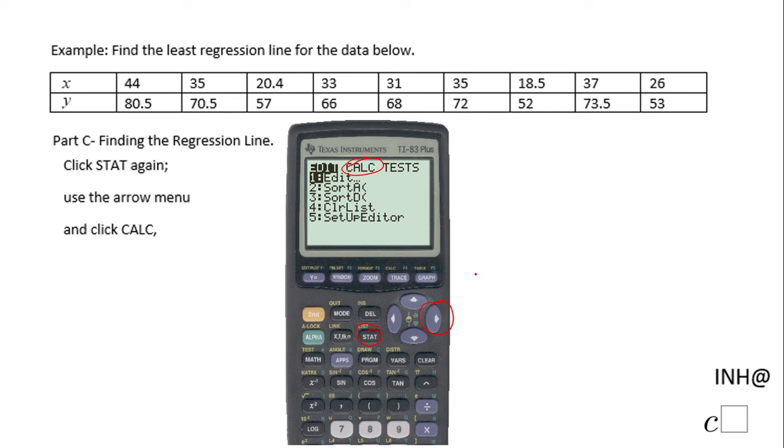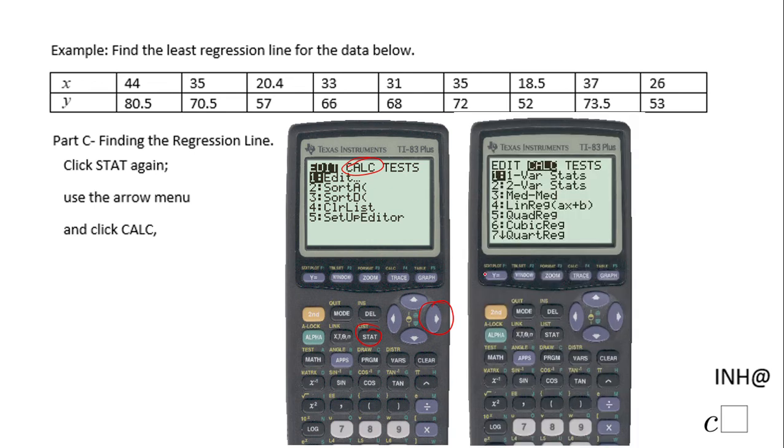And click CALC to be on CALC like this. And then you're going to see a bunch of things here. And you notice number four, it says the line regression, and they give you a linear equation ax plus b, similar to mx plus b, right?